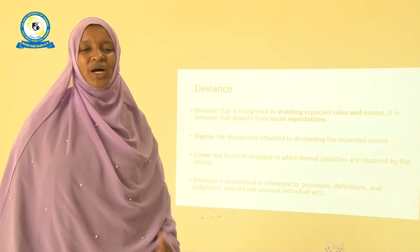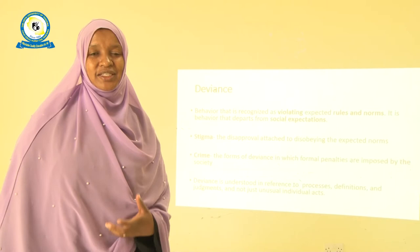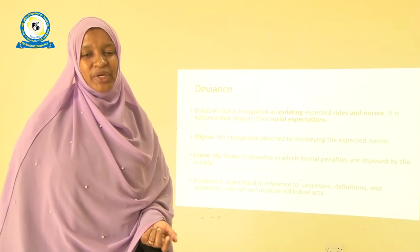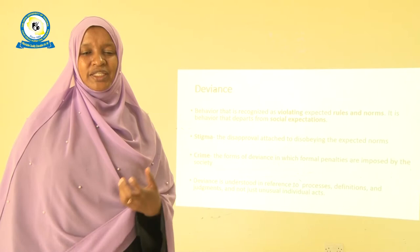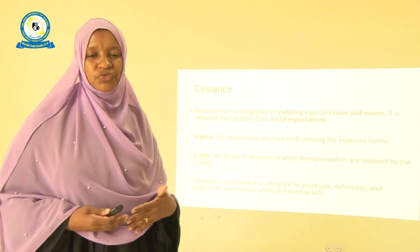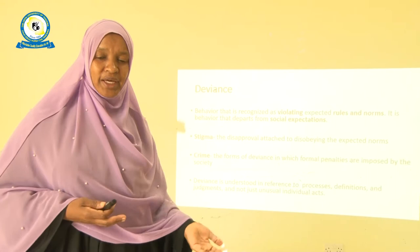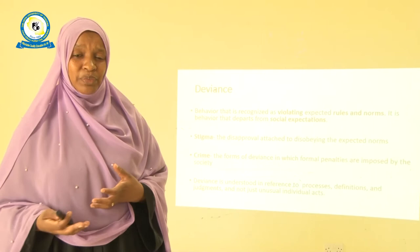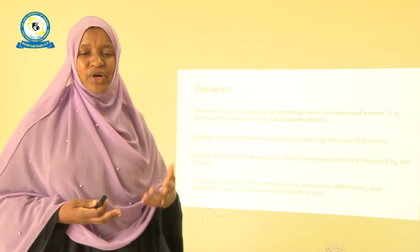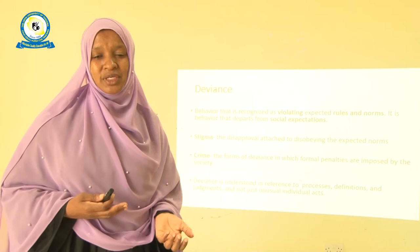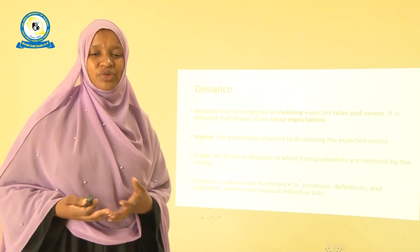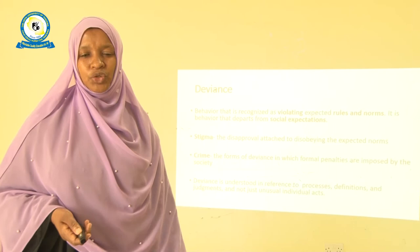Beginning with deviance — what is deviance, or how is deviance understood by sociologists? Deviance is said to be any behavior that is recognized as violating the expected rules and norms of our society, behavior that is removed from the social expectations. We did talk about how society socializes people from a young age to know the do's and don'ts and what is acceptable in order to maintain social harmony. Therefore, if one goes against these expected norms and rules, that person or group is said to be deviating.